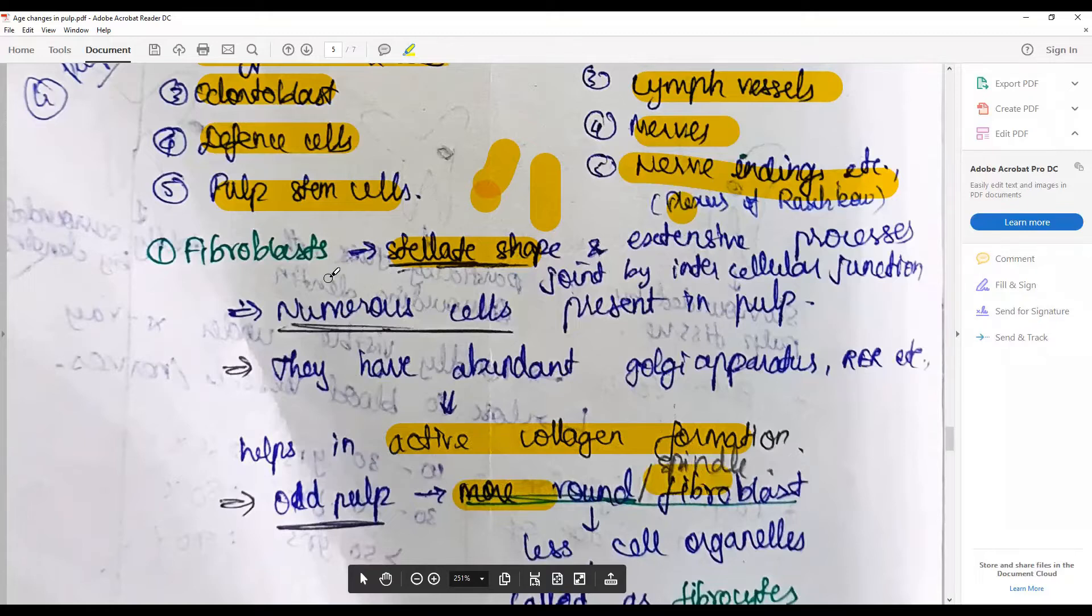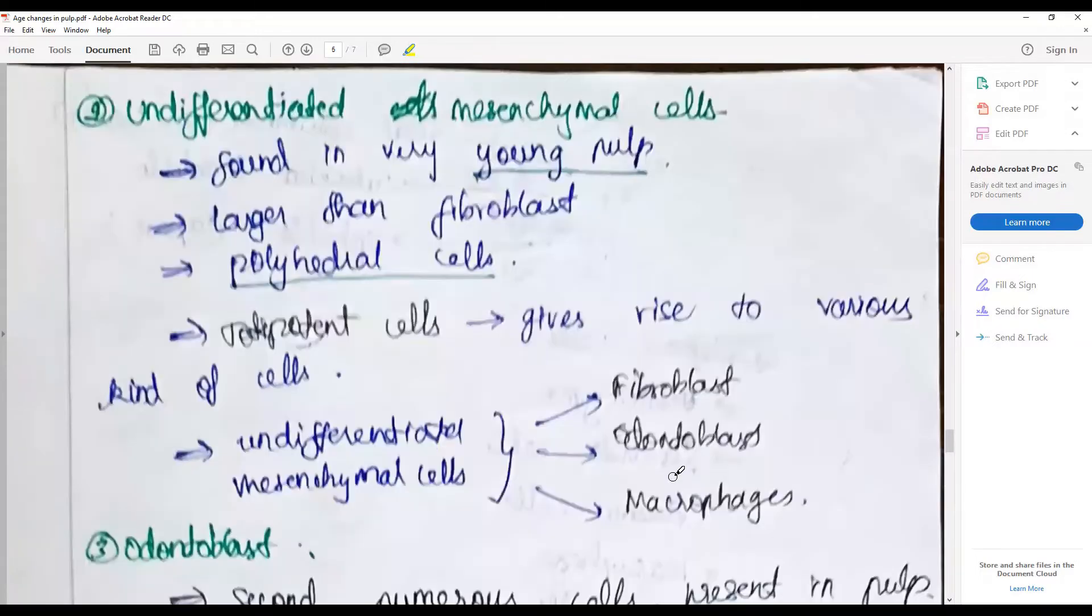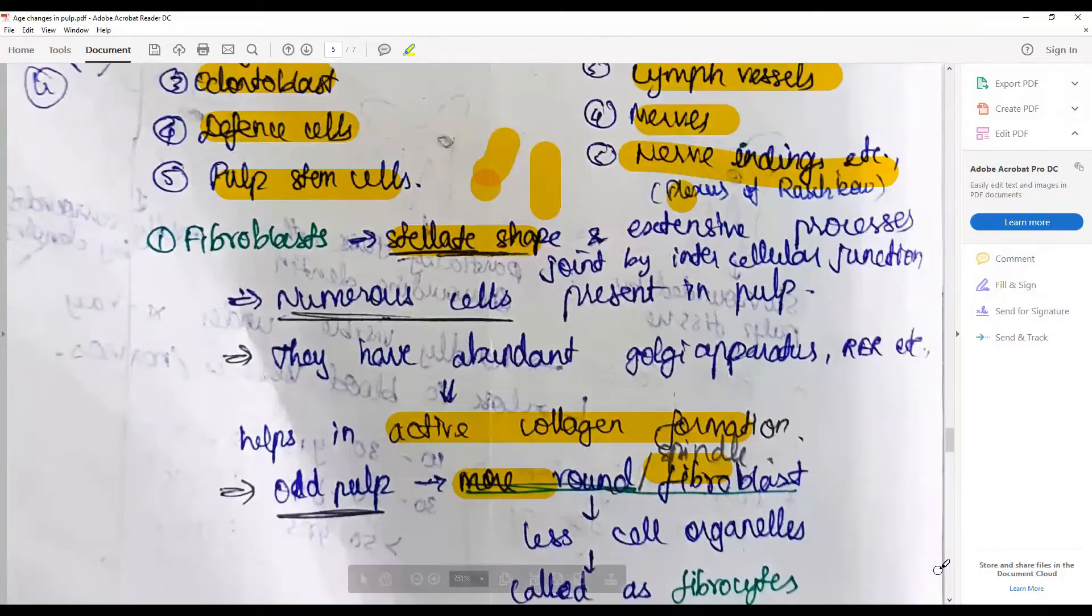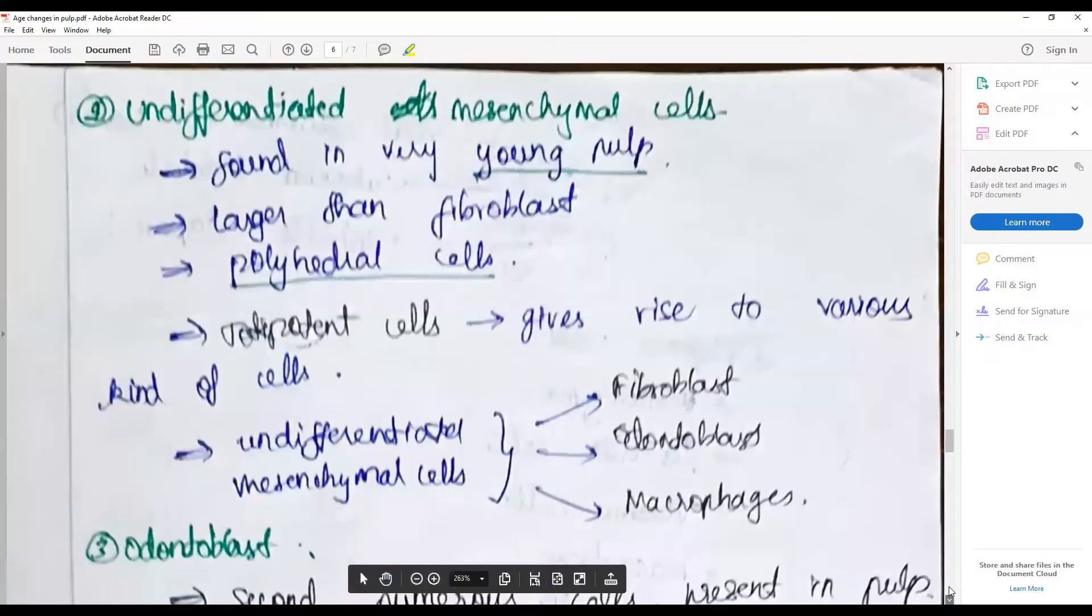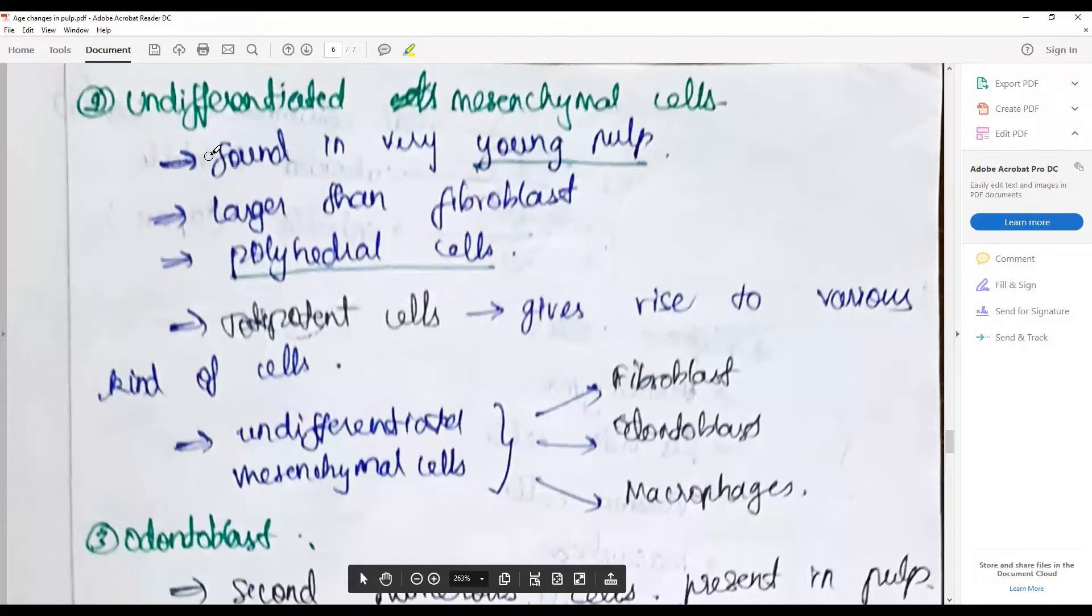The young fibroblasts are stellate, and as we progress in age they become spindle-shaped or round with less cell organelles. They become what we call fibrocytes. The undifferentiated mesenchymal cells are found in young pulp, larger than fibroblasts and typically polyhedral.